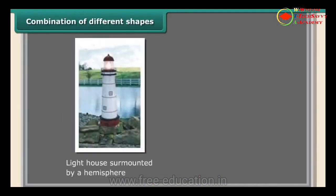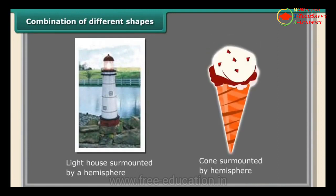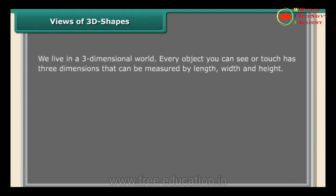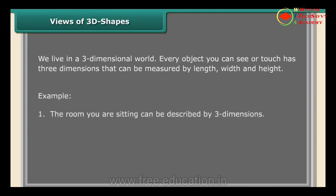Combination of different shapes: a lighthouse surmounted by a hemisphere, and a cone surmounted by a hemisphere are examples of combinations of shapes we use in our day-to-day life. We live in a three-dimensional world — every object you can see or touch has three dimensions measured by length, width, and height. For example, the room you are sitting in and the monitor you are looking at both have three dimensions.